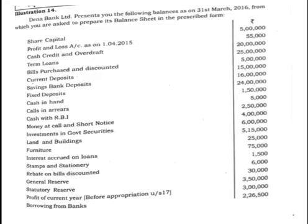Dana Bank Limited presents the following balances as on 31st March 2016, from which you are asked to prepare its balance sheet in the prescribed form. Share capital: 5 lakh. Profit and loss account as on 1st April 2015: 55,000. Cash credit and overdraft: 20 lakh. Term loans: 25 lakh. Bills purchased and discounted: 5 lakh. Current deposits: 15 lakh. Savings deposit: 16 lakh. Fixed deposits: 24 lakh. Cash in hand: 1 lakh 50,000.